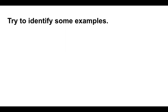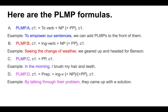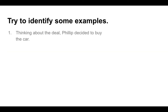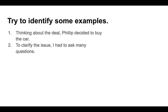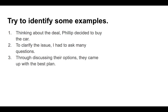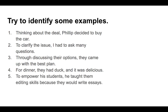Let's practice identification. You'll look at a sentence, then pause the video to decide if it's PLMP A, B, C, or D. Example 1: 'Thinking about the deal, Philip decided to buy the car.' Example 2: 'To clarify the issue, I had to ask many questions.' Example 3: 'Through discussing their options, they came up with the best plan.' Example 4: 'For dinner, they had duck and it was delicious.' And finally: 'To empower his students, he taught them editing skills because they would write essays.'